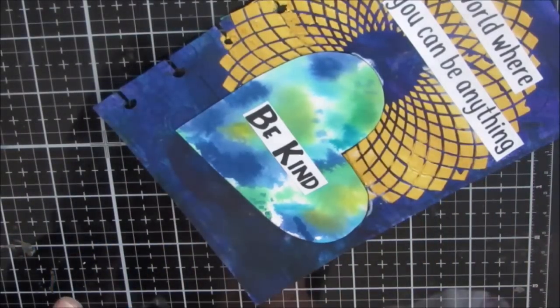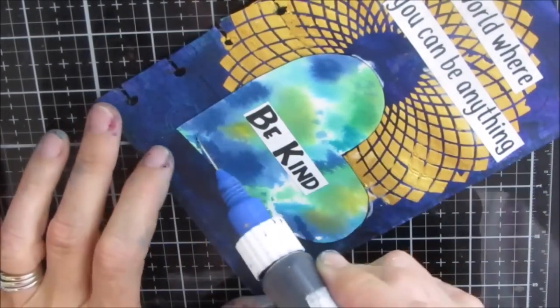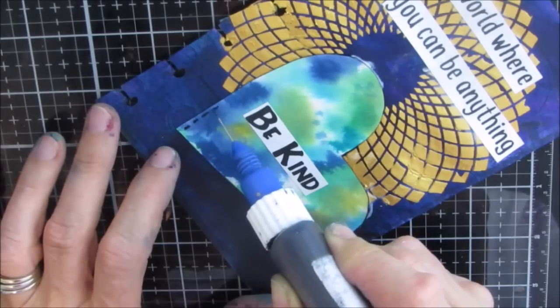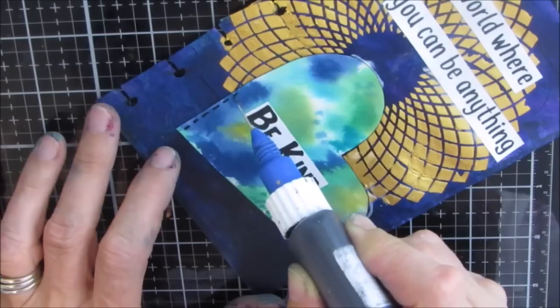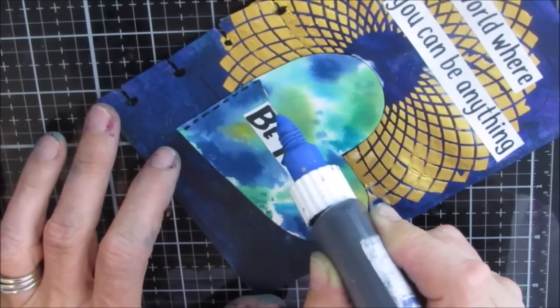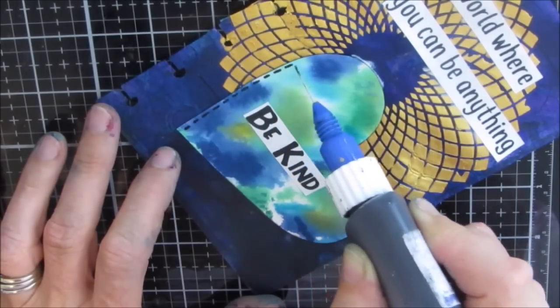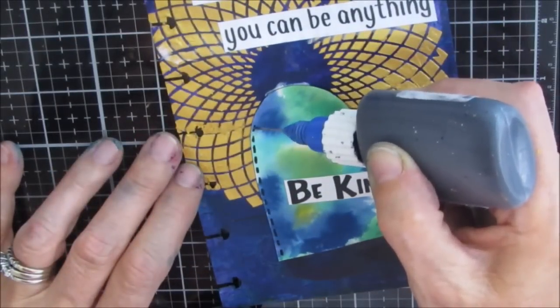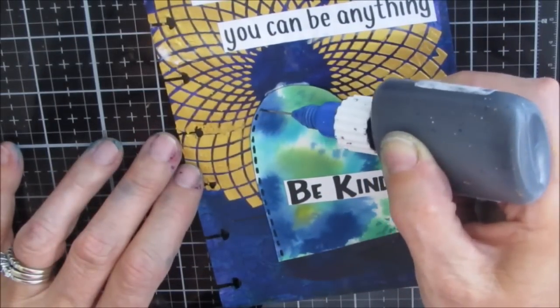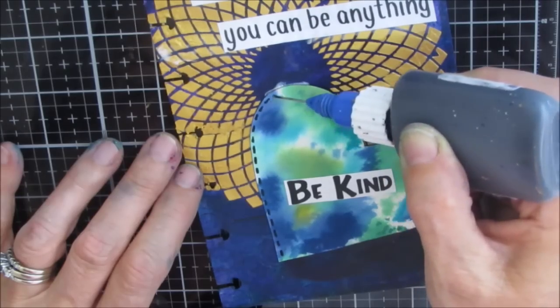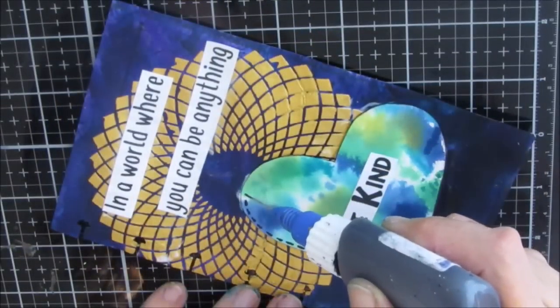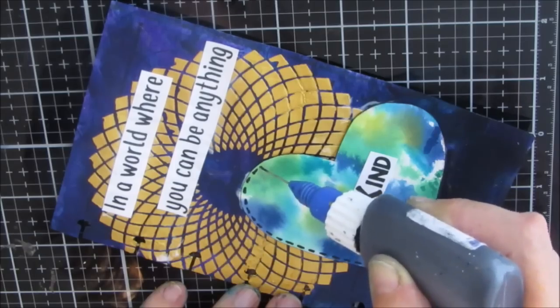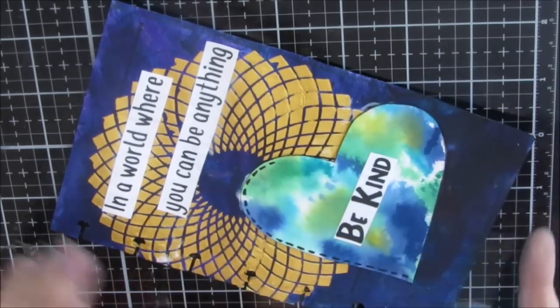So once that's all glued down and adhered, I grabbed my fine line bottle and I decide I need a little bit of detailing on this heart. Maybe it would have been okay if I had used the makeup sponge and gone around it, but I found it was missing something. Since it's watercolor I didn't want to apply any more wet medium and risk activating the watercolor.